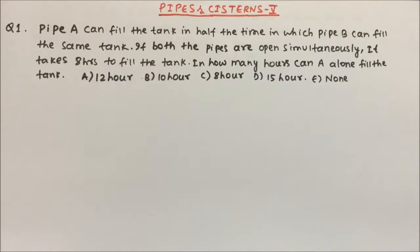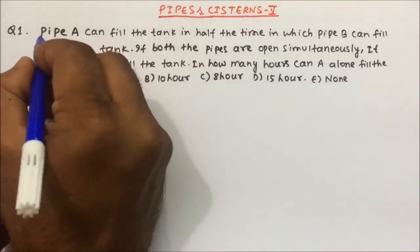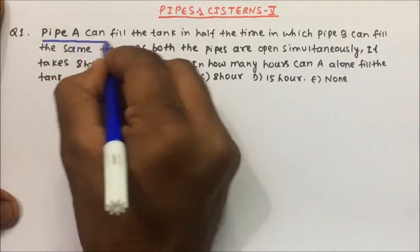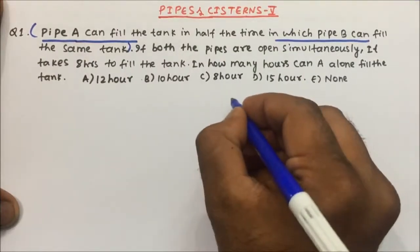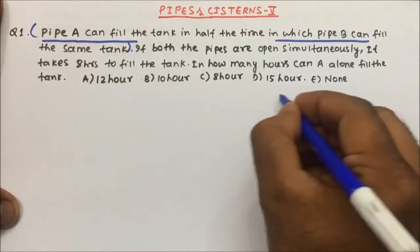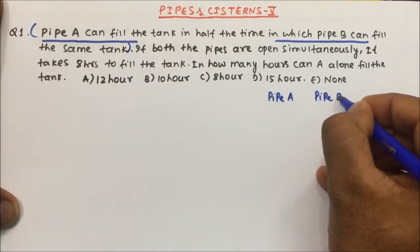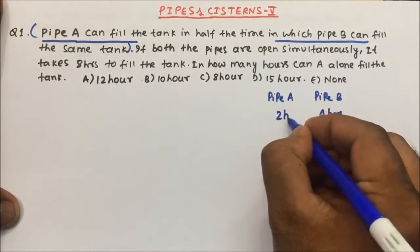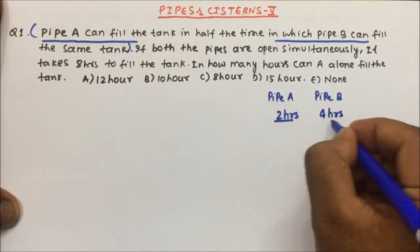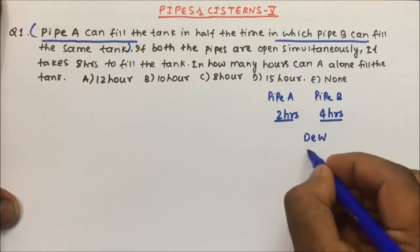The question is: Pipe A can fill the tank in half the time in which Pipe B can fill the same tank. So I will write down Pipe A and Pipe B. Suppose if Pipe B is taking 4 hours, then Pipe A will take half of that time, which will be 2 hours.